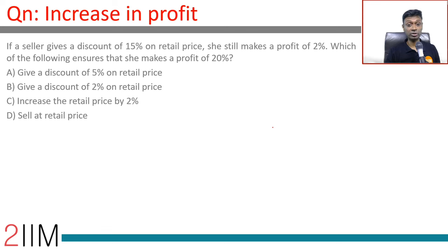If a seller gives a discount of 15% on retail price, she still makes a profit of 2%.